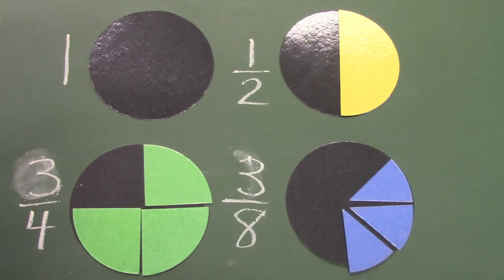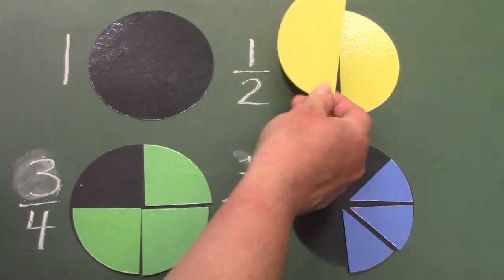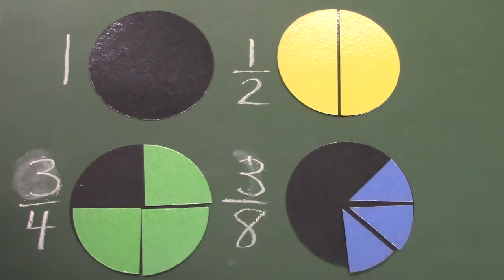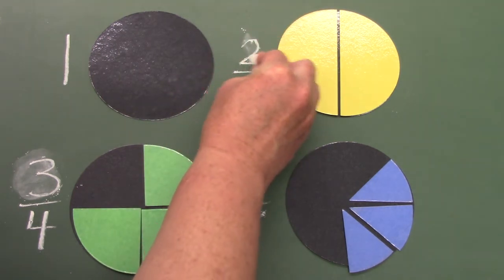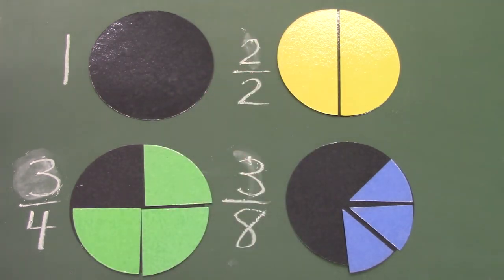Well, what about this one up here? If I add another half, I would have two out of the two pieces. And do you know what? That would be a whole because we would have the entire circle.